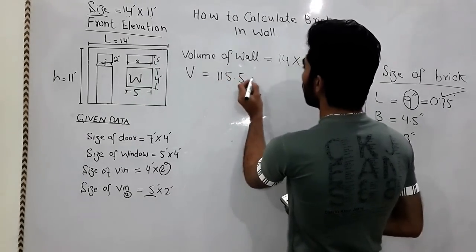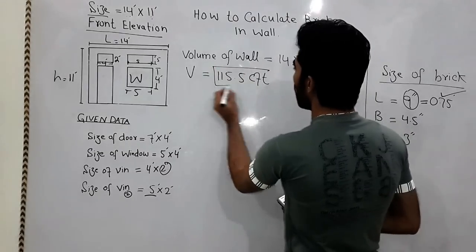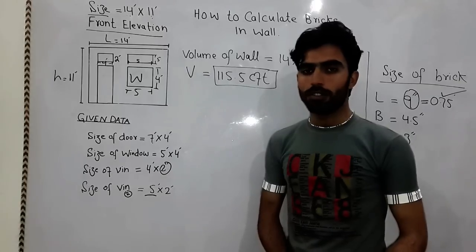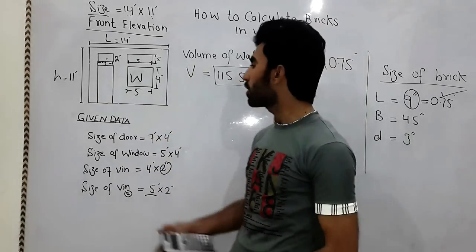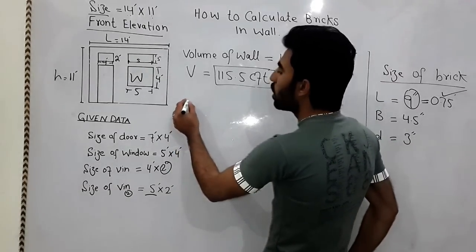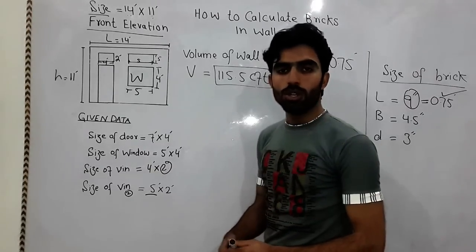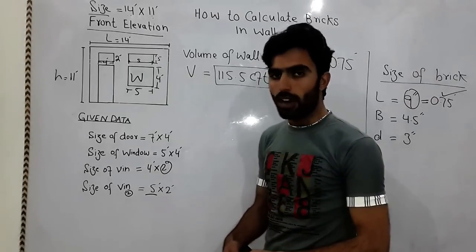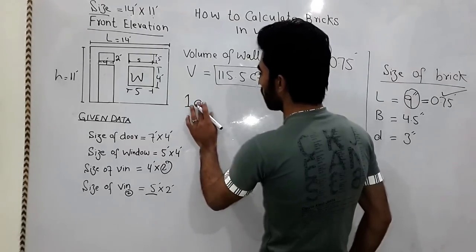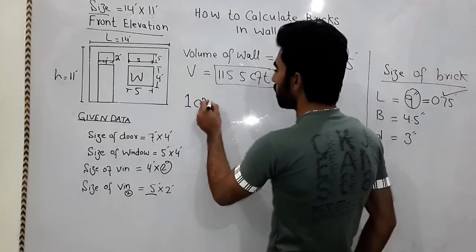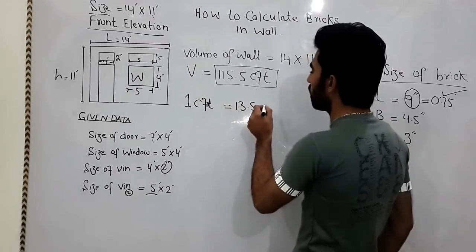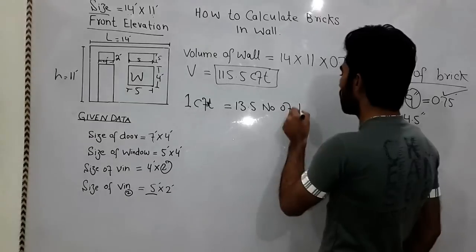115.5 cubic feet — this is the volume for this section. Now I need the quantity of bricks: how many bricks are required in this section? In 1 cubic foot we use 13.5 bricks. So 1 cubic foot equals 13.5 number of bricks.